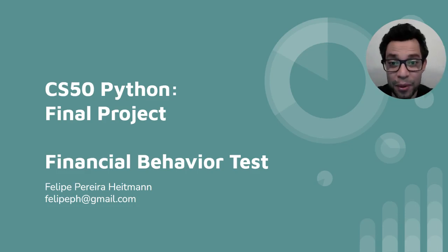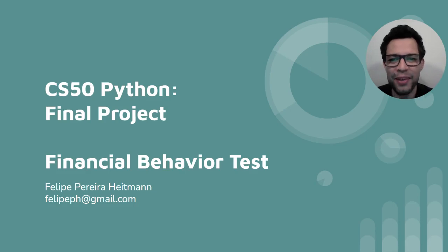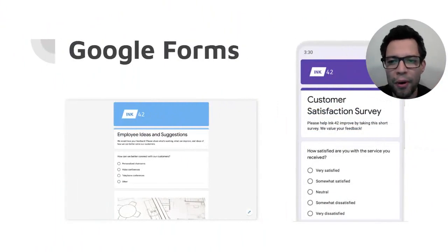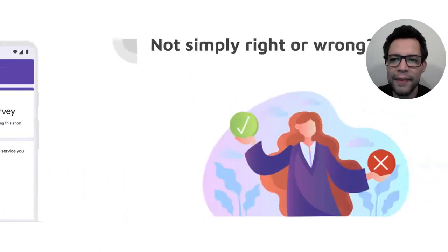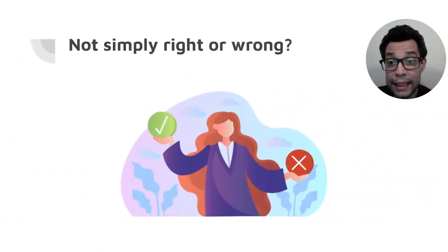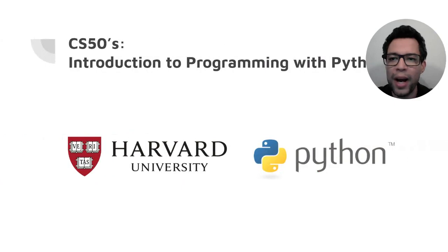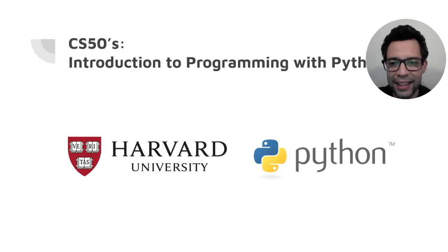Hi, I'm Felipe Heichmann from Belo Horizonte, Brazil, and this is my CS50 Python final project, Financial Behavior Test. When planning a survey, the first platform you think about is Google Forms or something like that. But what if your survey needs to assign different values to each of users' answers and not only check if they're right or wrong? This is why I created this final project for CS50's Introduction to Programming with Python.